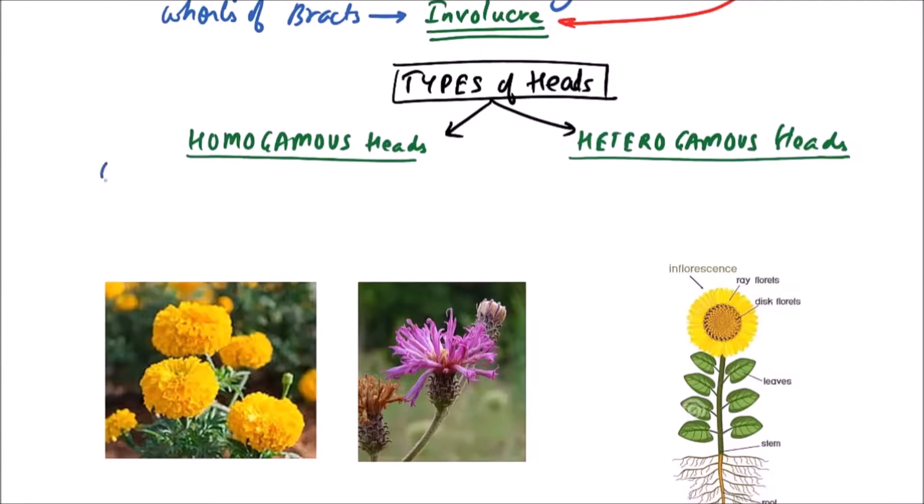In homogamous heads only one type of florets are present, which may be of two types: all disc florets type or all ray florets type.